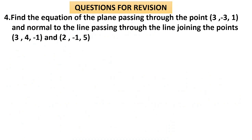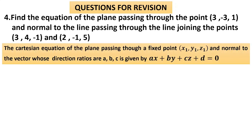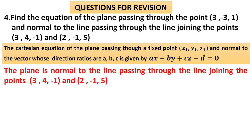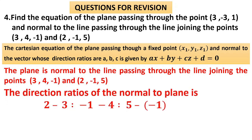Question 4: Find the equation of the plane passing through a given point and normal to the line joining two given points. The direction ratios of the normal are found from the two points on the line: (2–3, –1–4, 5–(–1)) equals (–1, –5, 6). So the direction ratios of the normal to the plane are –1, –5, 6, which give the coefficients of x, y, z in the plane equation.